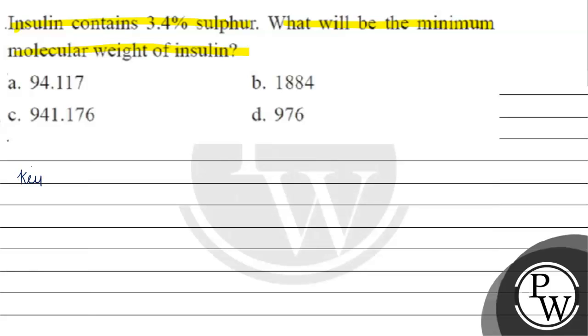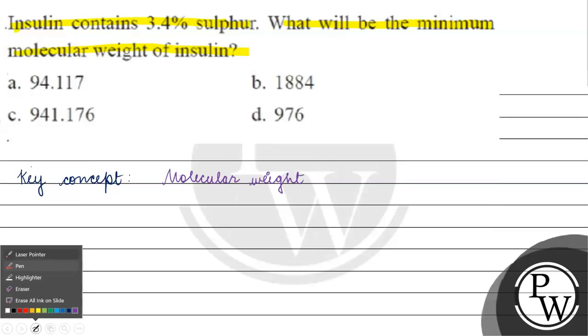The key concept for this question is molecular weight. Now, if we are talking about this question, what did we say? Insulin has 3.4% of sulfur. We asked what will be the minimum molecular weight of insulin.